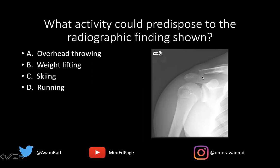So here we have, if you take a look at the distal clavicle, notice that it almost looks like a rat ate out a piece of the subchondral bone here. We have distal clavicular osteolysis, or resorption of bone. And of course, this is seen in post-traumatic cases like that seen in weightlifting. So weightlifting is the best answer, particularly those who bench press and do heavy bench pressing.